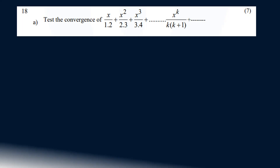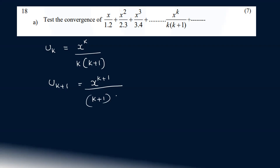In this format, the general term uk is x raised to k by k into k plus 1. The next term, uk plus 1, has x raised to k in the numerator, and the denominator becomes k plus 1 into k plus 2.